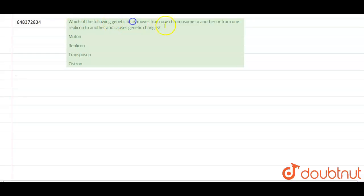Which of the following genetic units move from one chromosome to another or from one replicon to another and causes genetic changes? Options are muton, replicant, transposome and cistron. The correct option is transposome. So let's see what are transposome.